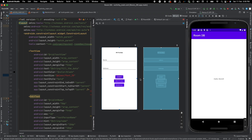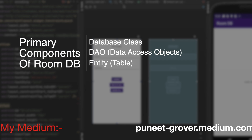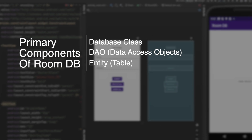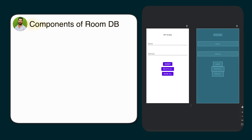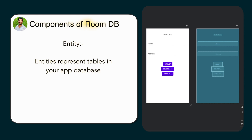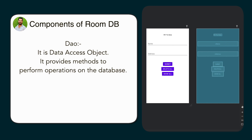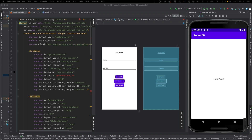Now let's discuss about the primary components of room database. There are three components we basically should know. One is the database class, one is about the tables — that is your entity — and third is your DAO, data access object. The database class holds the database and serves as the main access point for your app's persisted or stored data. Entities represent tables in your app's database. And DAO provides methods that your app can use to query, update, insert, and delete data in the database.